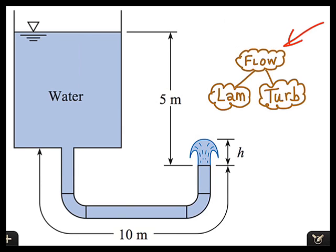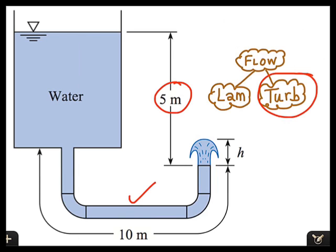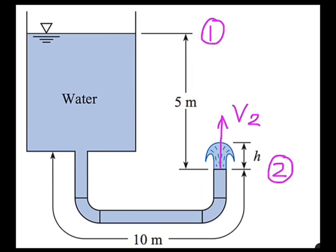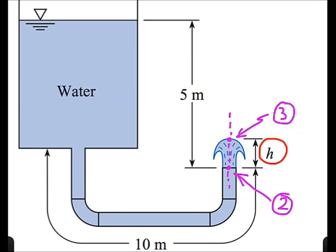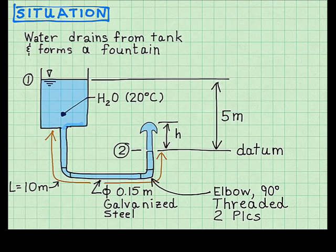Flow in the pipe can be either laminar or turbulent. I'll guess that the flow is turbulent because there's 5 meters of elevation head and the pipe diameter is about half an inch, which is relatively large. To find Goal 1, the exit velocity, I'll apply the energy equation from section 1 at the top of the reservoir to section 2 at the pipe exit. To find Goal 2, the height of the free jet, I'll draw a streamline through the jet, define points 2 and 3 on this streamline, and apply the Bernoulli equation.